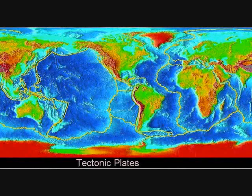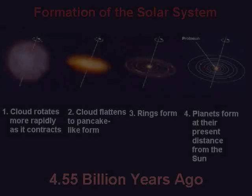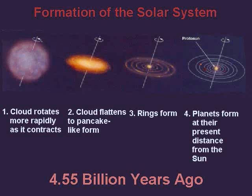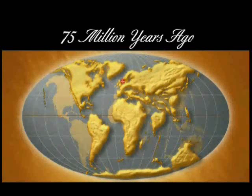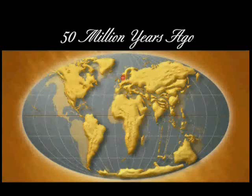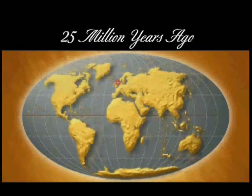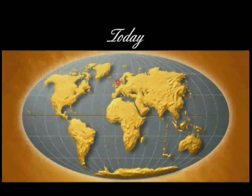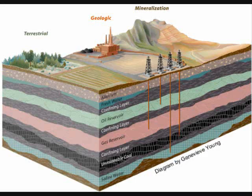To understand where oil and gas come from, we need to understand first how the universe was created, and then how the earth was formed from this creation. In discussing the early stages of earth's creation, we will describe the theory of plate tectonics — how the plates move, what happens when they move, and the changes that these movements create. We need to understand plate tectonic theory because it helps us in our quest to locate oil and gas.